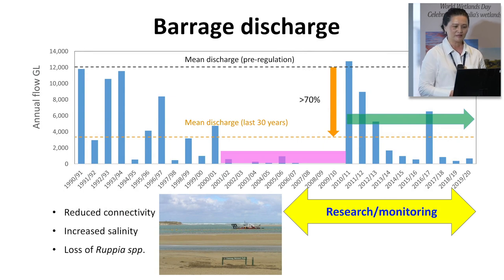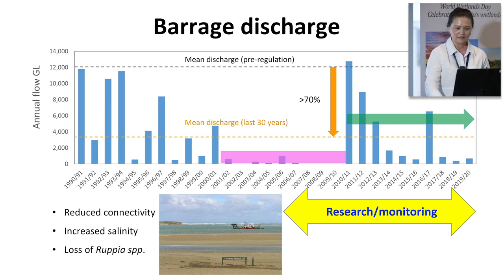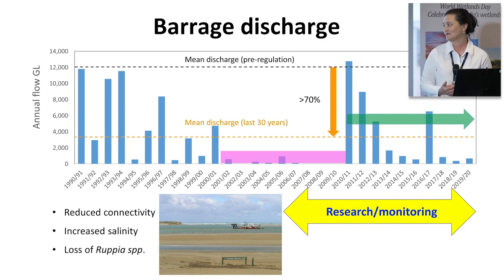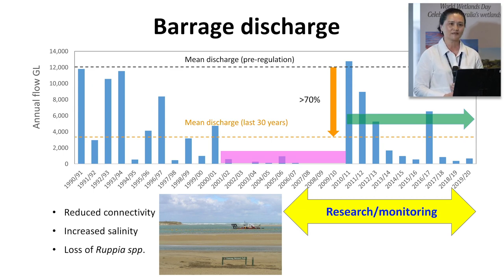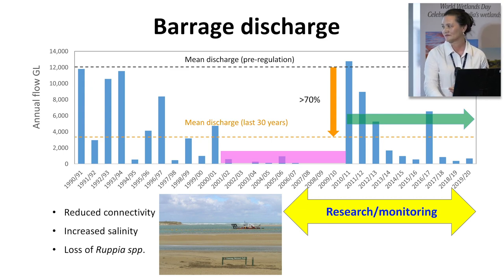Looking at the last 30 years of barrage discharge data, compared to pre-regulation model information, there has been a 70% reduction in flows in the system. This is causing a massive impact. The best example is during the Millennium Drought - the system was really stressed with virtually no flow throughout the decade. The Murray mouth had to be dredged to keep connectivity, and dredging is still ongoing. The whole system experienced increased salinity - the south lagoon became four times hypermarine, causing even salt-tolerant species like smallmouth hardyhead to disappear from the south lagoon, along with the loss of rupia.